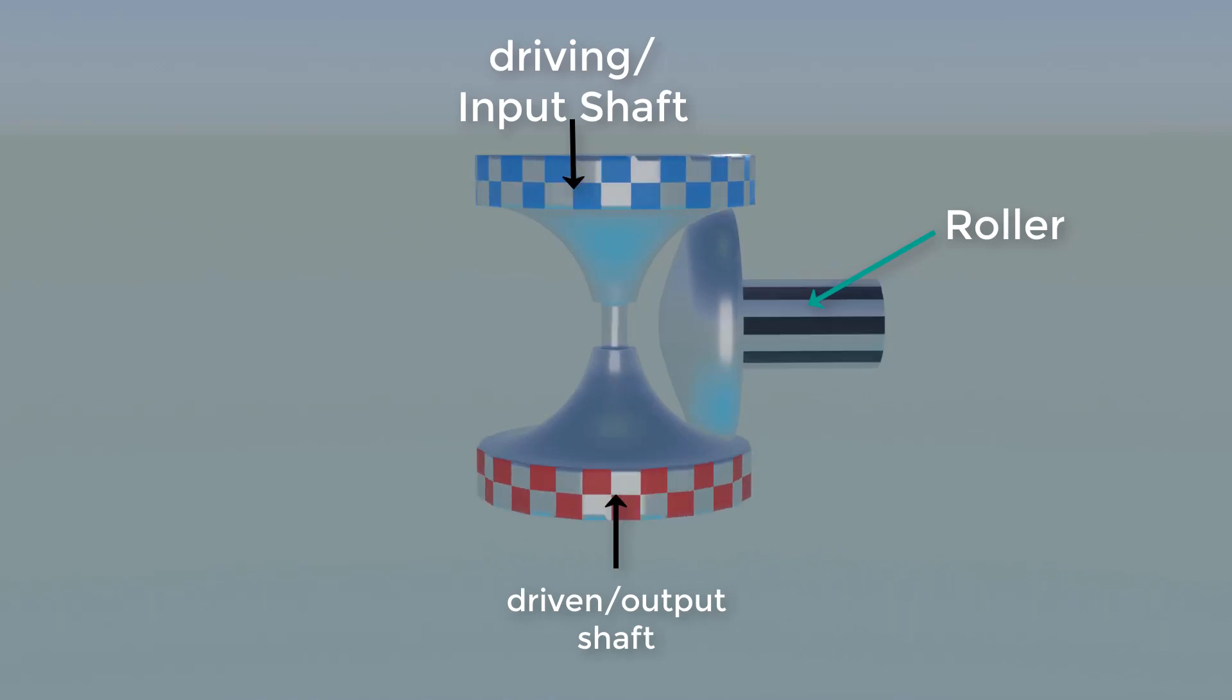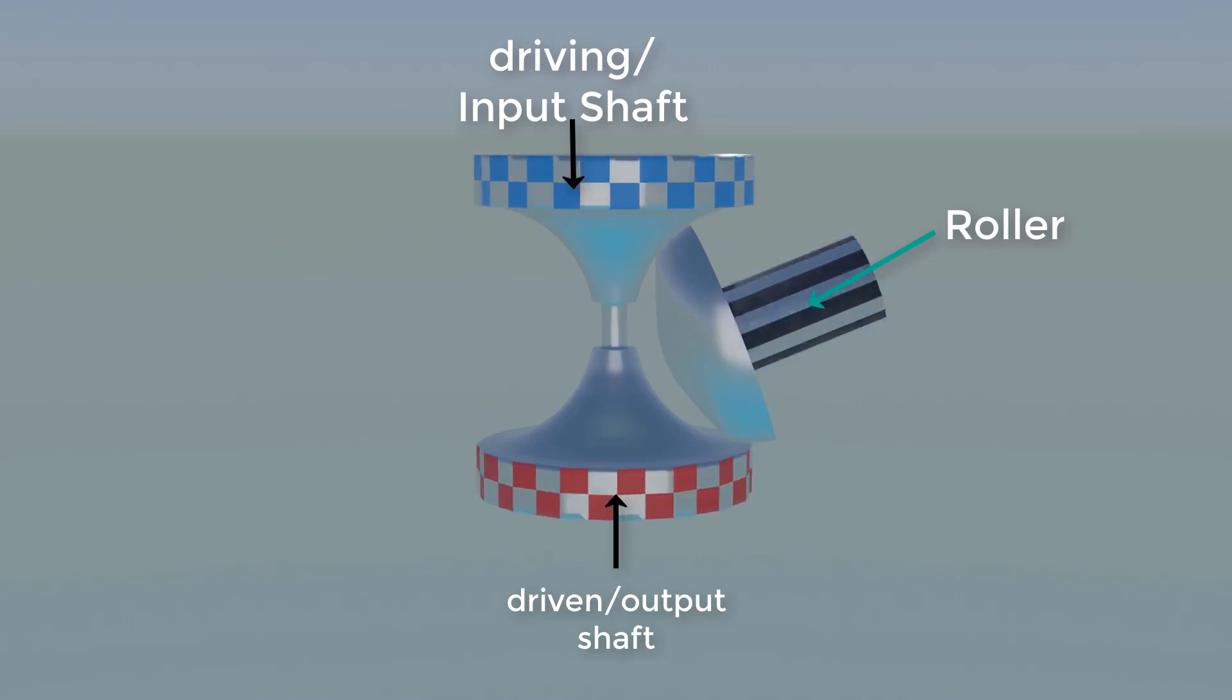When the roller rotates about its pivot point where the roller contacts the smaller radius of the driving disc and larger radius of the driven disc, it gives a low RPM at output. This thing is acting like a small gear rotating a bigger gear.